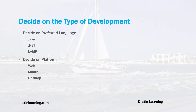If you're going to develop for the Java platform, you can utilize either Windows or Linux. If you decide to develop with Microsoft .NET, you really have no choice but to develop on the Windows platform. If you decide to develop for the LAMP platform, you really need to run Linux as your development computer. Another consideration is whether you're going to develop web-based applications, software for mobile applications, or desktop software.